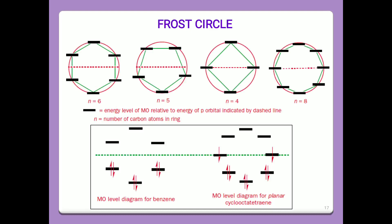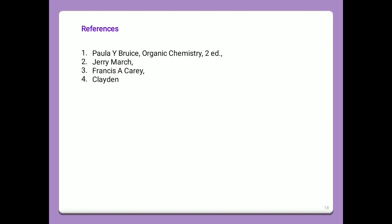The molecular orbital level diagram for benzene and for planar cyclooctatetraene are presented. Final conclusion: if the compound is planar and obeys the Huckel rule, it is an aromatic compound. This data is drawn from references 1, 2, 3, and 4. Thank you, viewers.